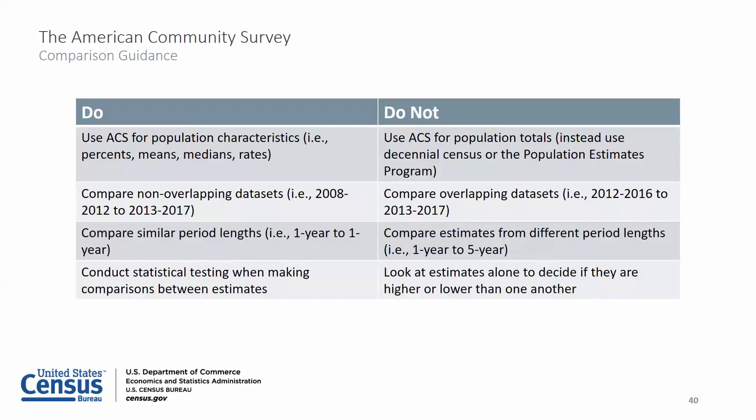It's also important to keep in mind that ACS data are estimates. We collect data from a sample of the population in the United States and Puerto Rico rather than from the whole population. To help you interpret the reliability of the estimates, the Census Bureau publishes a margin of error for every ACS estimate. Unless you take into account the MOEs, you cannot conclude the estimates are statistically different from one another. You have to conduct statistical testing when making comparisons between estimates to check for any differences.